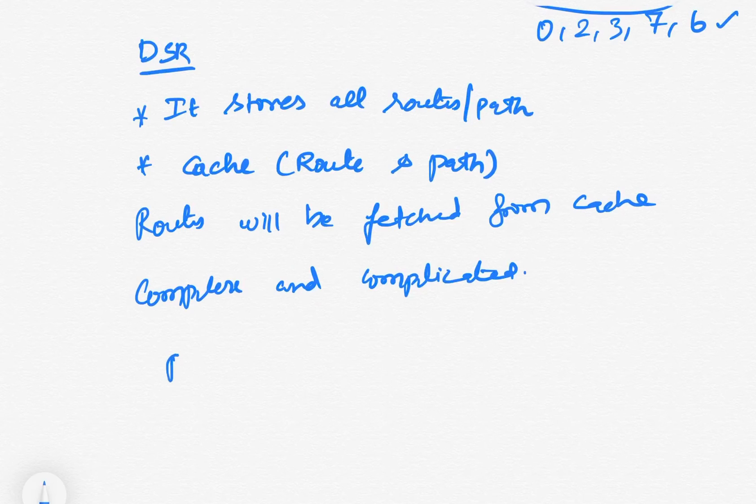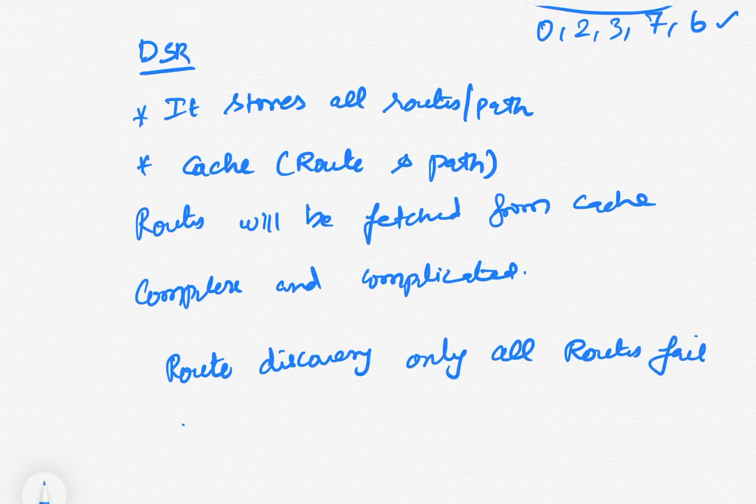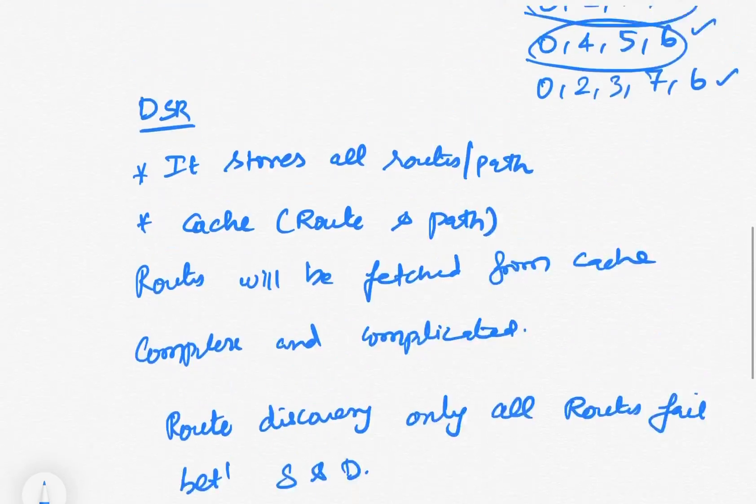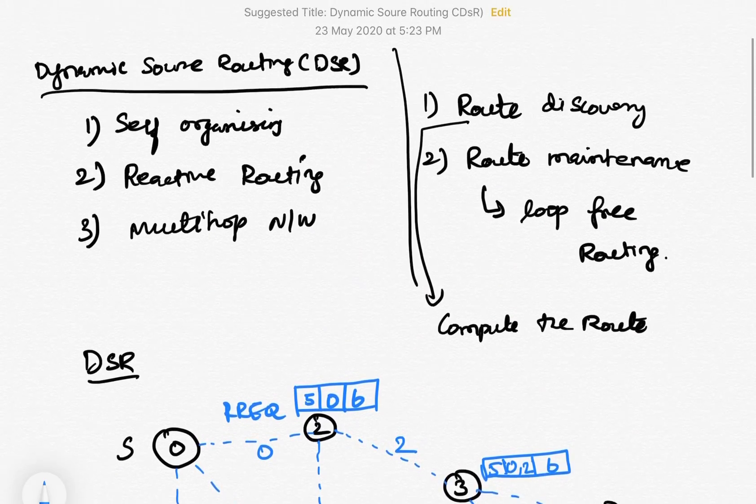Since it is reactive, route discovery will happen next time only when all routes fail between source and destination. This is a simple explanation of how DSR works. Thank you for watching this video.